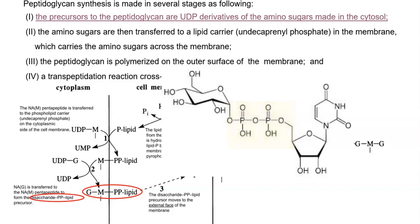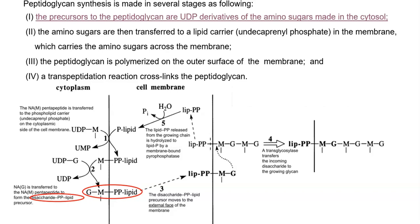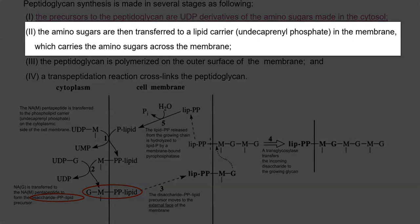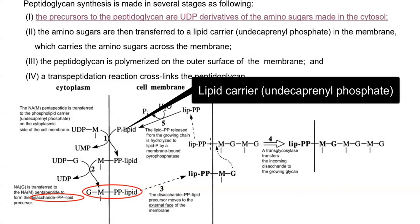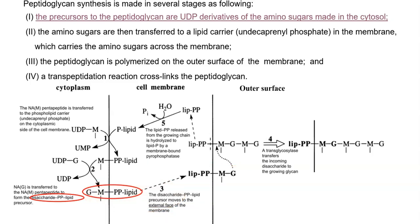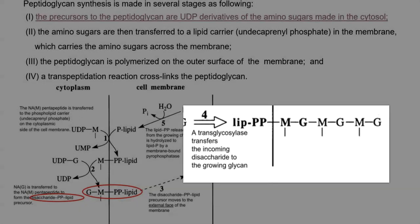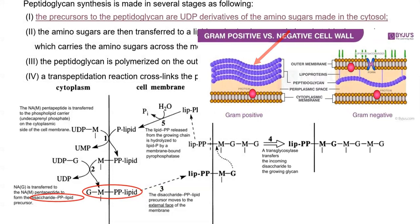Uridine diphosphate is an energy-giving molecule for carrying and attaching the precursors to the cell wall. These precursors are made from amino sugars in the cytosol. In the second step, the amino sugars are transferred to the lipid carrier — undecaprenol phosphate — which helps transfer the precursors across the cell membrane. Finally, the peptidoglycan is polymerized outside the cytoplasmic membrane, and a transpeptidation reaction cross-links the peptidoglycan to form the final cell wall molecule.